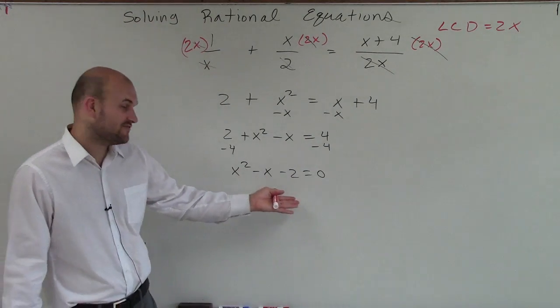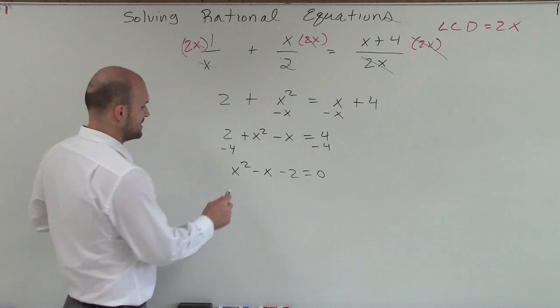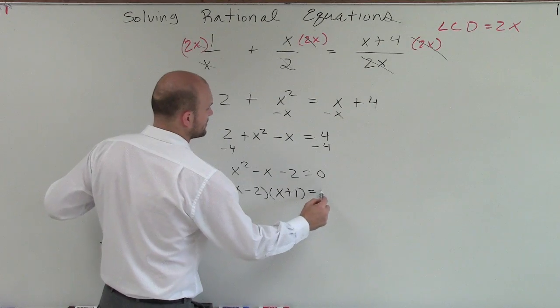Now I need to determine, can I factor this any forward? What two numbers multiplied gave me negative 2, but then I had to give me a negative 1? Well, we could say that's going to be x minus 2 times x plus 1 equals 0.